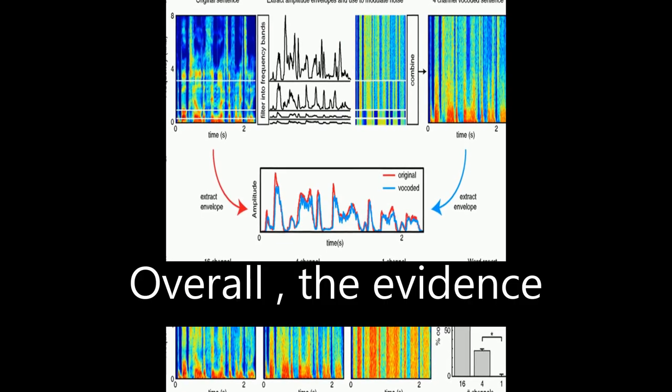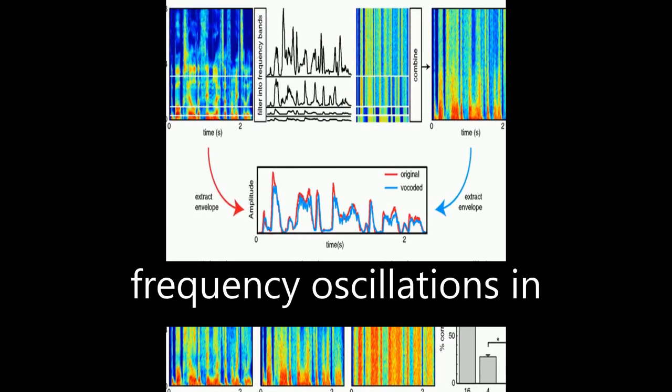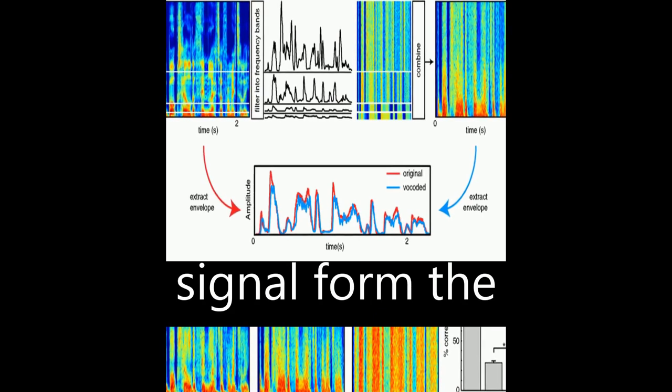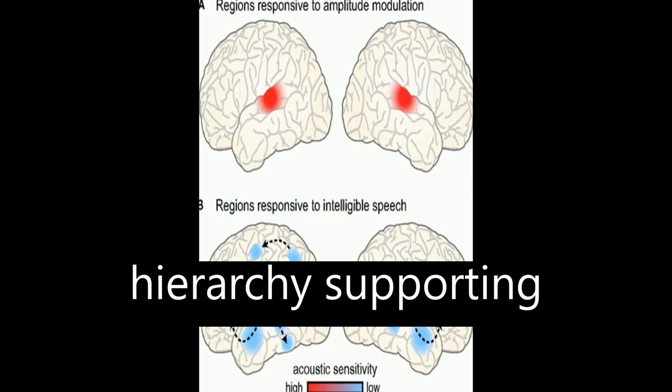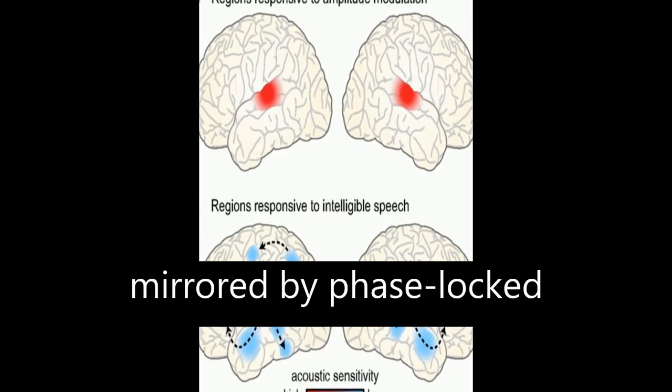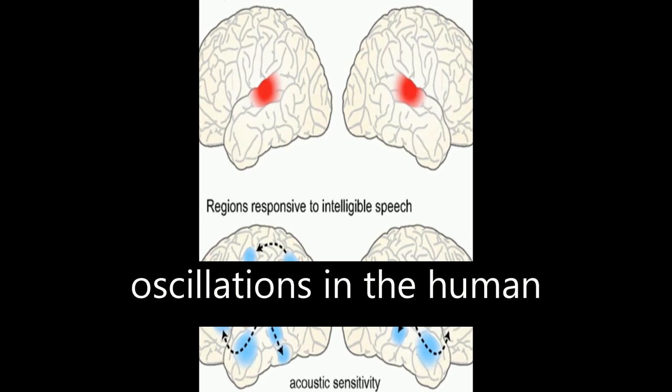Overall, the evidence suggests that low-frequency oscillations in the acoustic speech signal form the foundation of a rhythmic hierarchy supporting spoken language mirrored by phase-locked oscillations in the human brain.